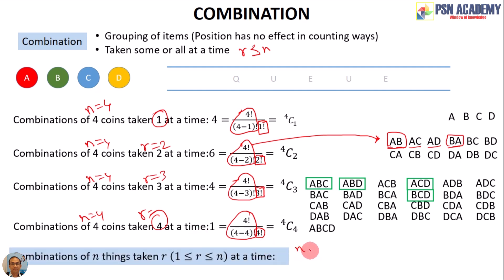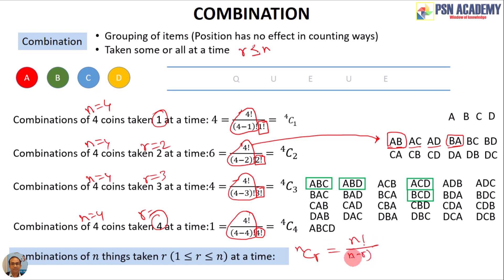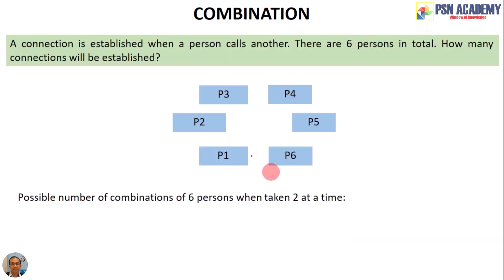So the combination formula is nCr = n! / ((n−r)! × r!).